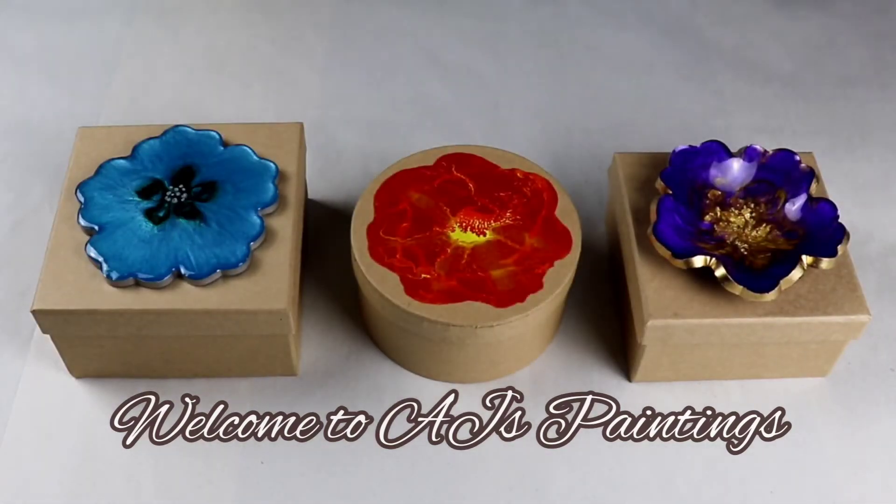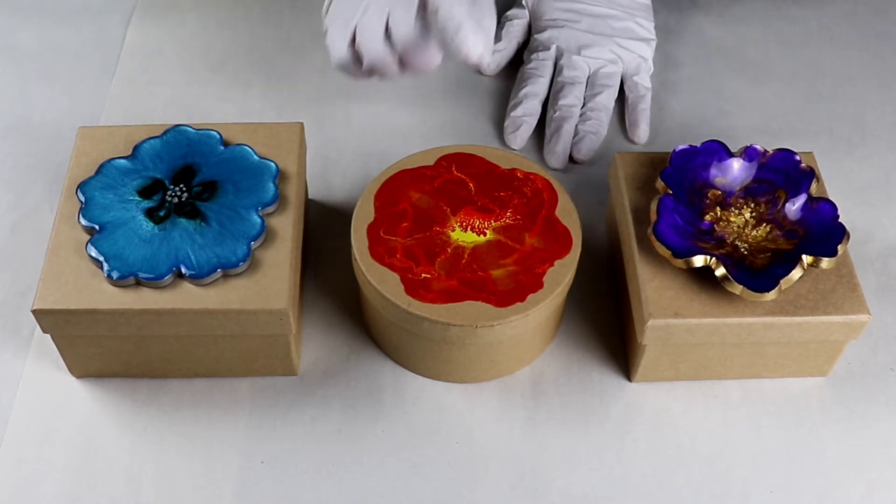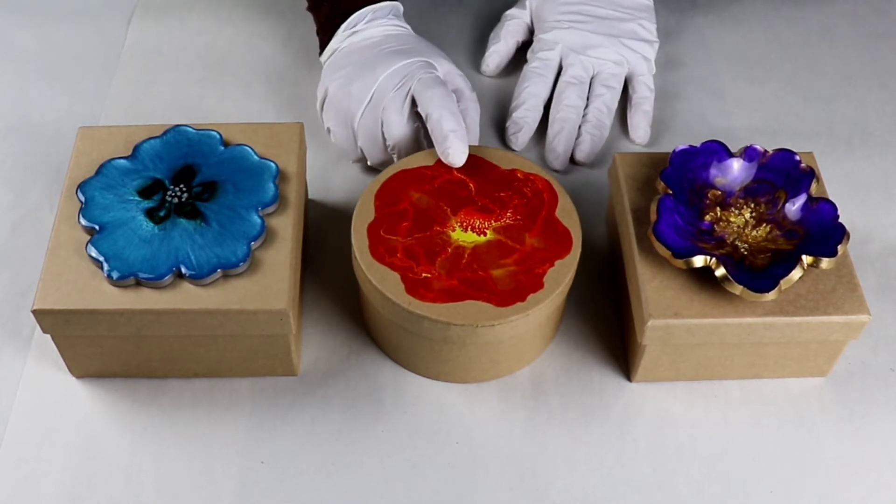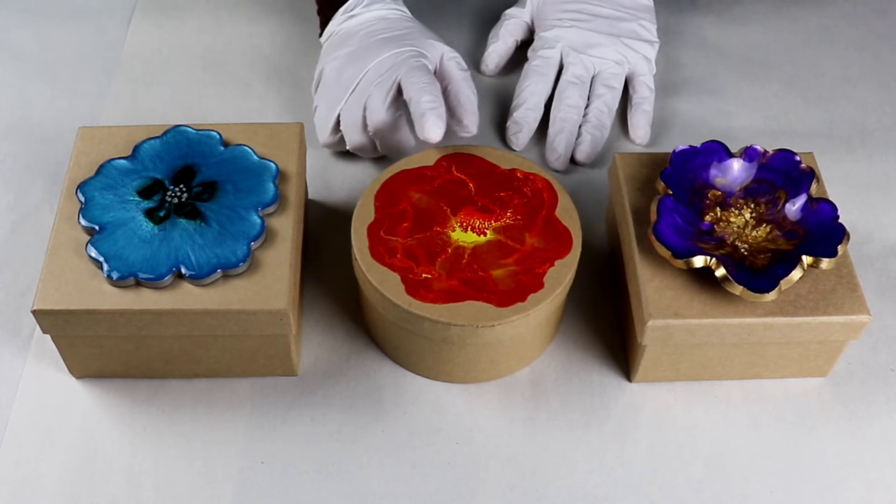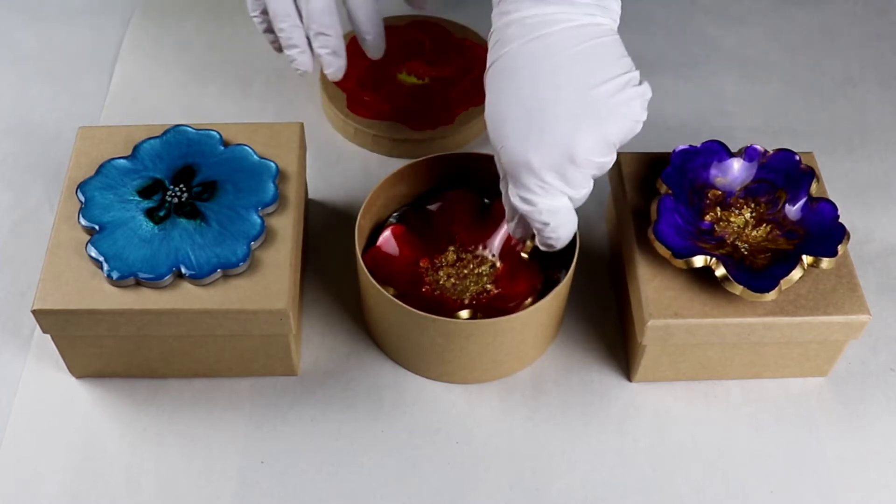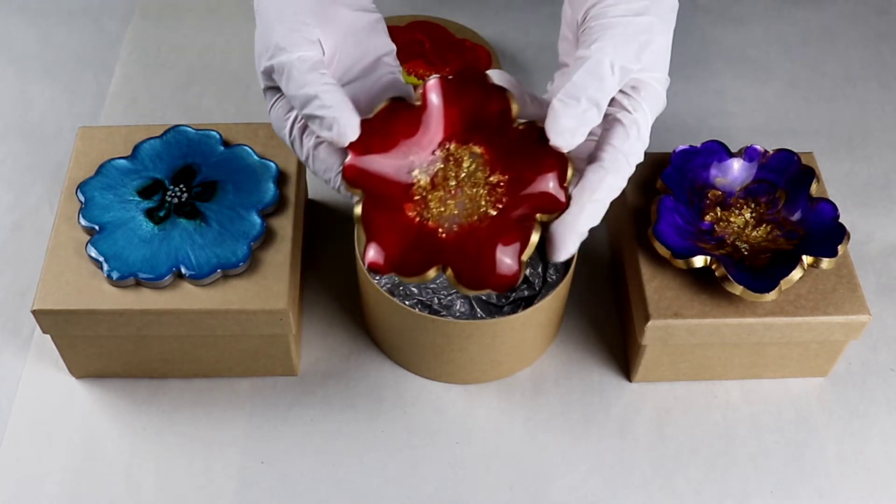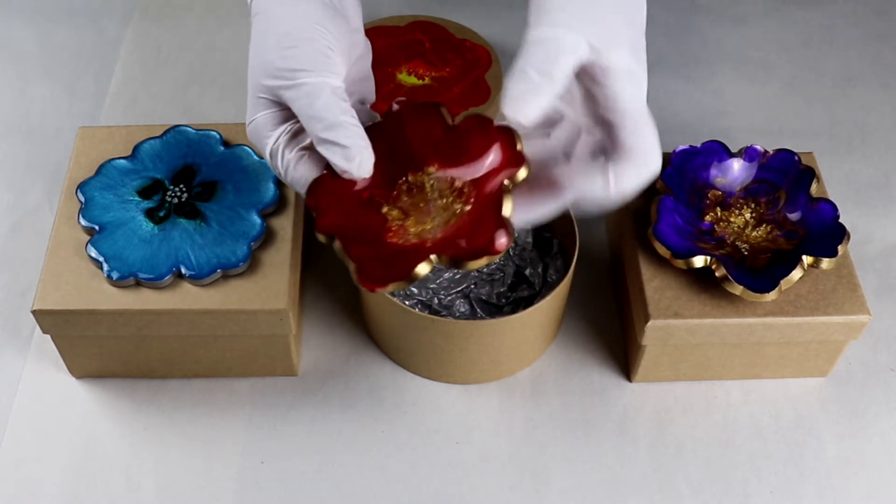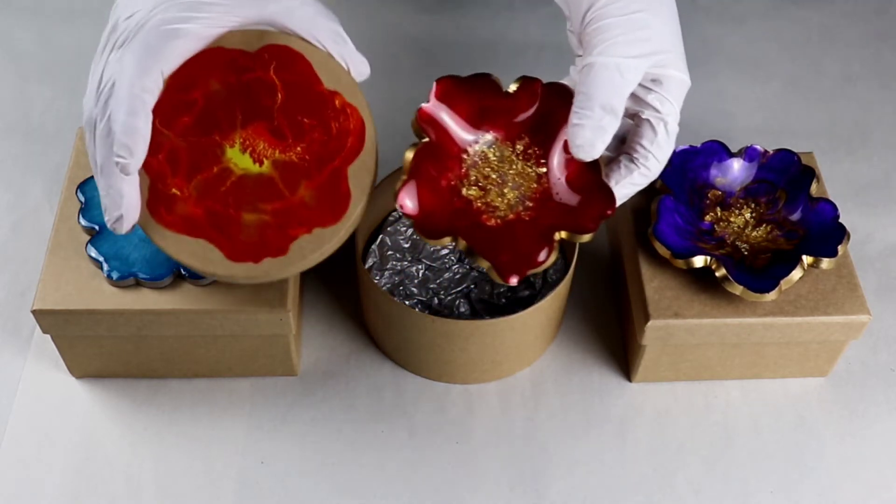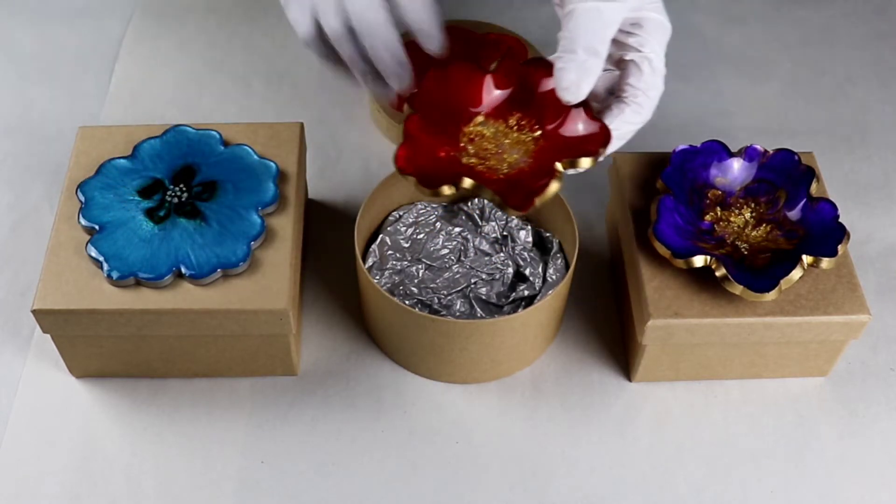Hi guys, welcome back to AJ's Paintings. Today's video is going to be a quick tutorial on how I make these beautiful boxes. So I started creating these boxes to put in my resin trinket dishes that I create, and I try to kind of mimic it on the top to make it a custom look, to make it really pretty and it just adds something to it.